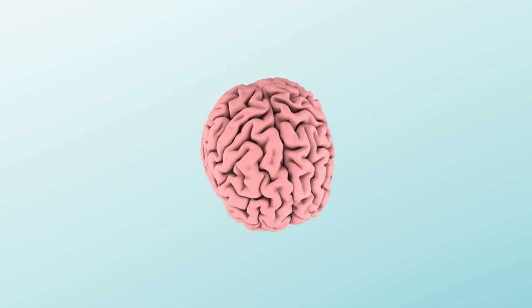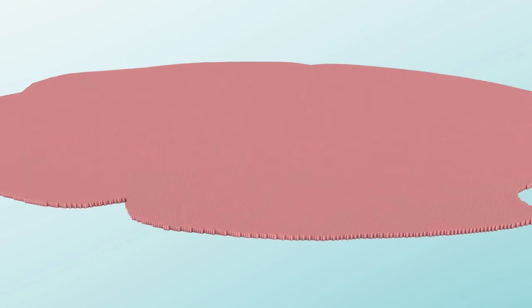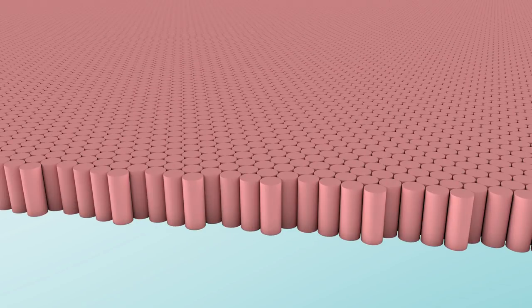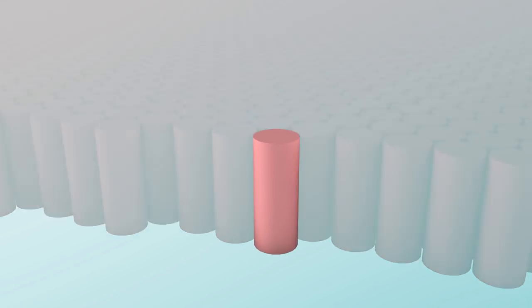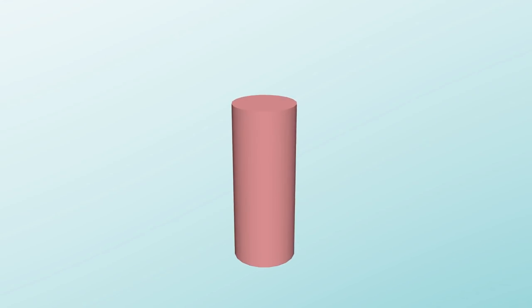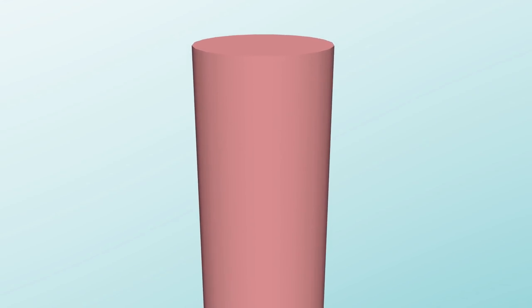To make this all come together into a coherent theory, we're going to need to bring back the spinning brain. Remember when I told you that the neocortex is a homogenous sheet? There's a repeating structure in this sheet called a cortical column. You have hundreds of thousands of them in your brain, and they're all doing the same thing. Understanding this processing unit is crucial to understanding intelligence in the brain.